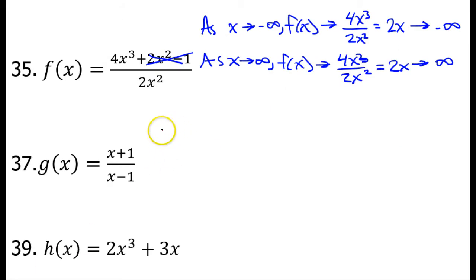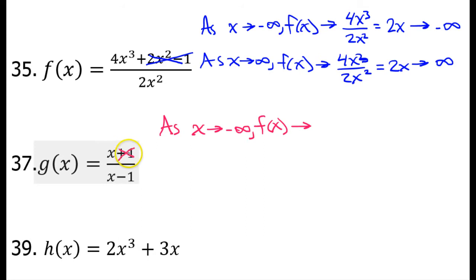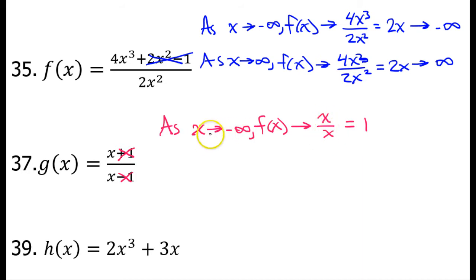Alright, let's do a few more. As x approaches negative infinity, f of x approaches. Very quickly, as x approaches negative infinity, this plus 1 is going to become insignificant, and in the denominator, this minus 1 is going to become insignificant. So, f of x is going to approach x over x, which is going to equal 1. We can't divide by zero normally, but we are approaching negative infinity — we are nowhere near zero. So, this will always equal 1.